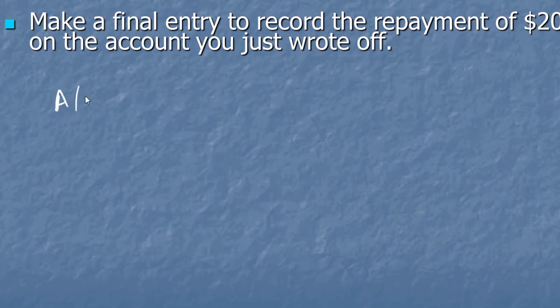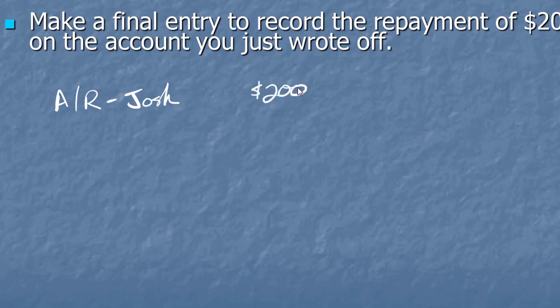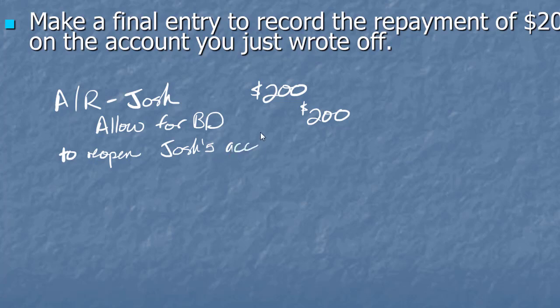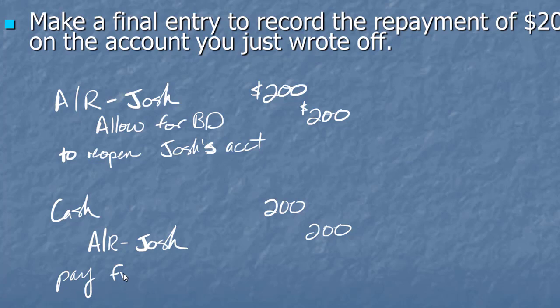So this individual comes in, I'm going to create a new account receivable, let's say it's Josh again, tells me he's going to repay me 200 of the $2,000 that he owed me. So I'm going to reopen his account for the amount I think I'm going to get. And I'm going to put that money back into my allowance for bad debt so that somebody else can steal from me instead. This is to reopen Josh's account. Then, once I've got the account open again, then I can make the journal entry to receive the payment. Payment from Josh on account.